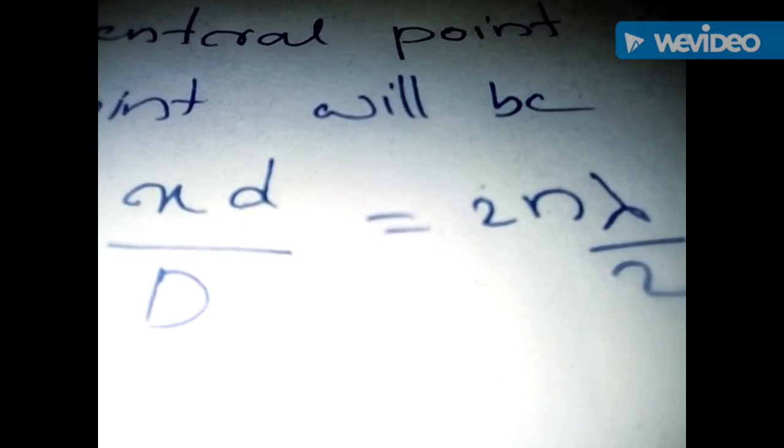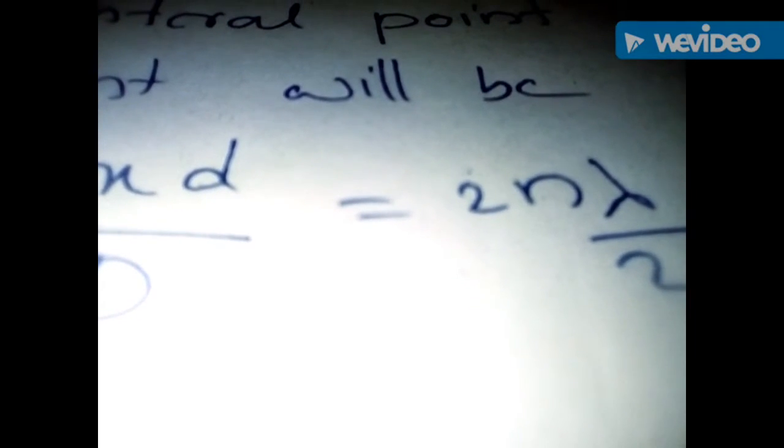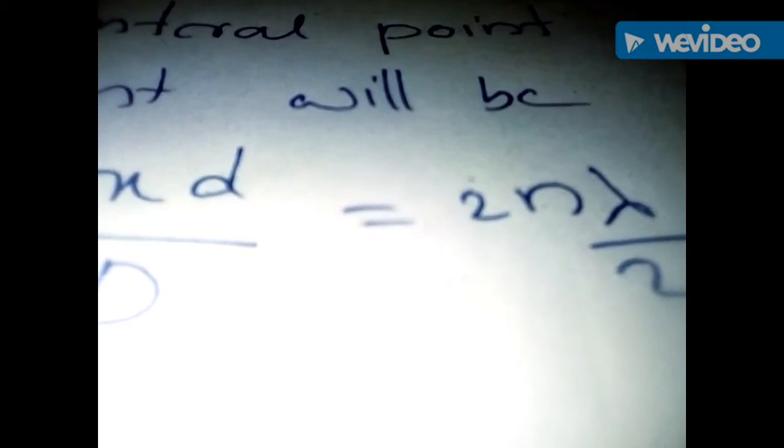So for different waves, lambda is different. The waves can obey these conditions at different points.